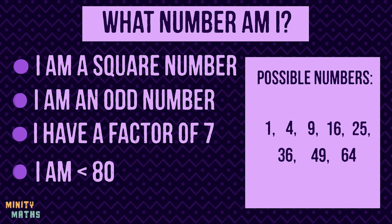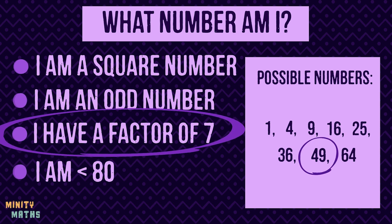Now we have listed all the square numbers less than 80, we can narrow the list down even more. In fact, choosing just one more of these clues will give us the correct answer. We can see that no other number on this list has a factor of 7 except 49, so this must be the answer.